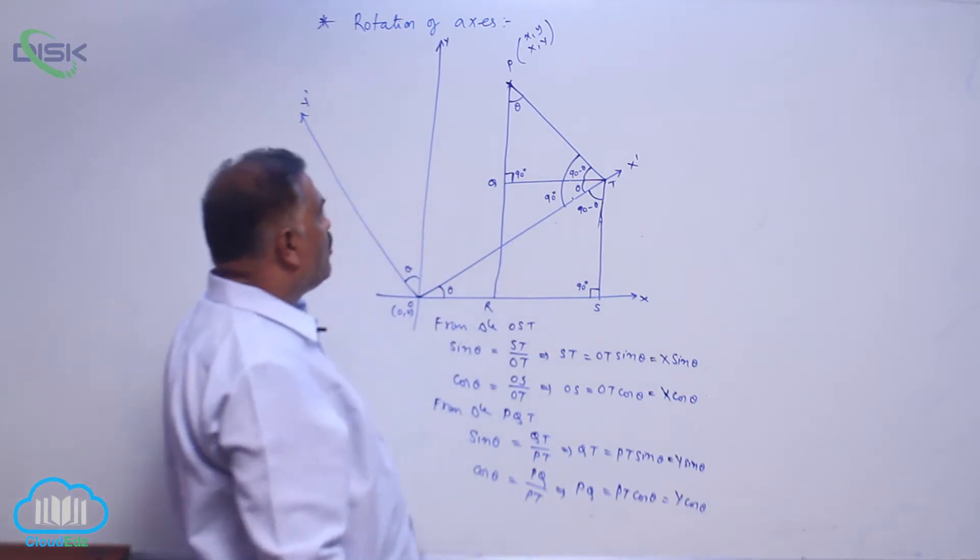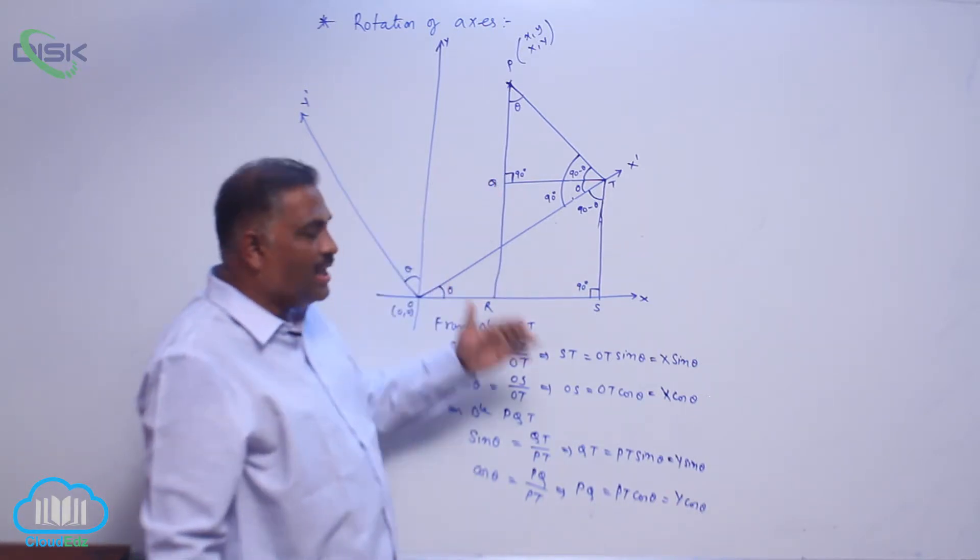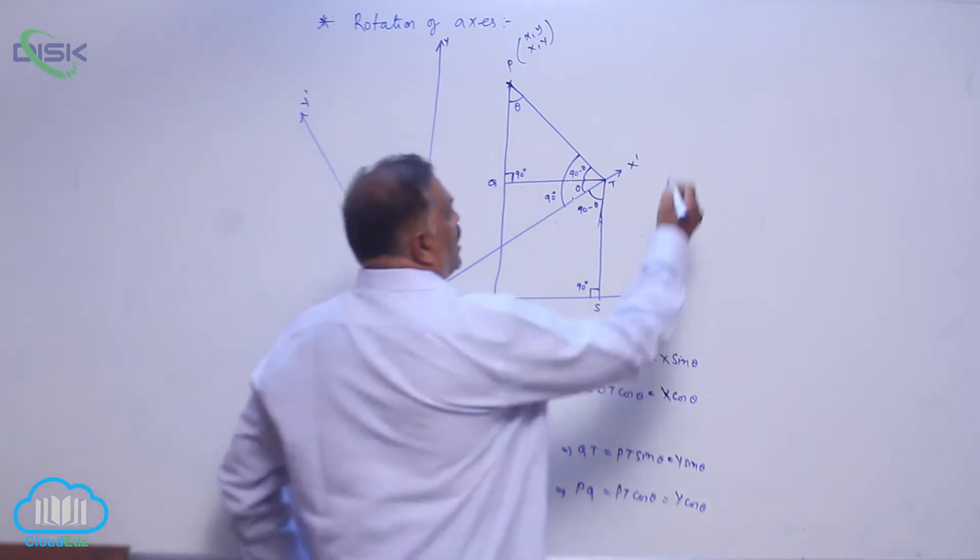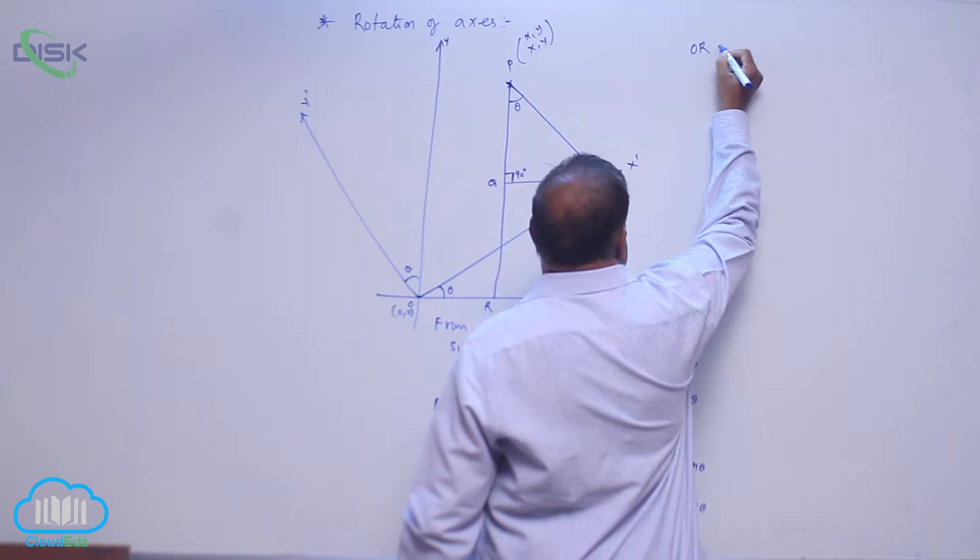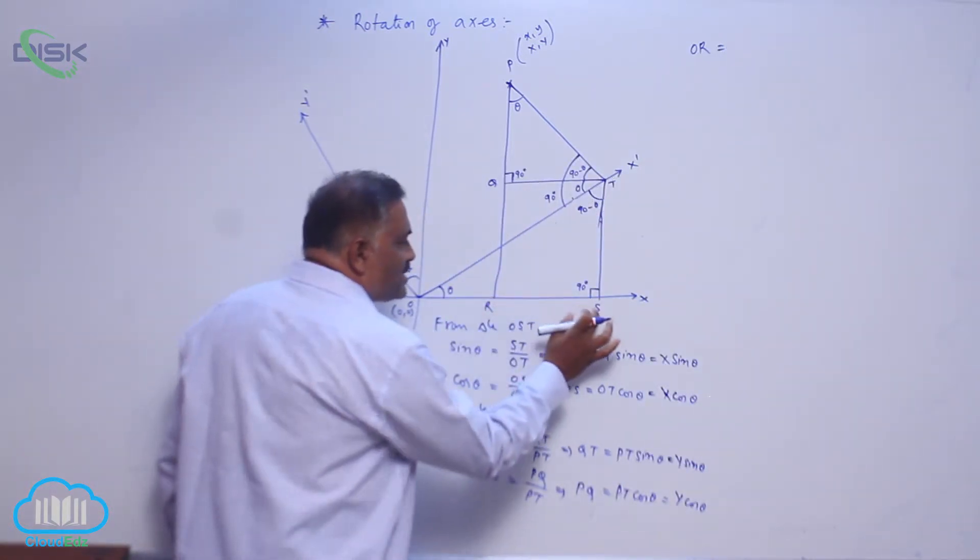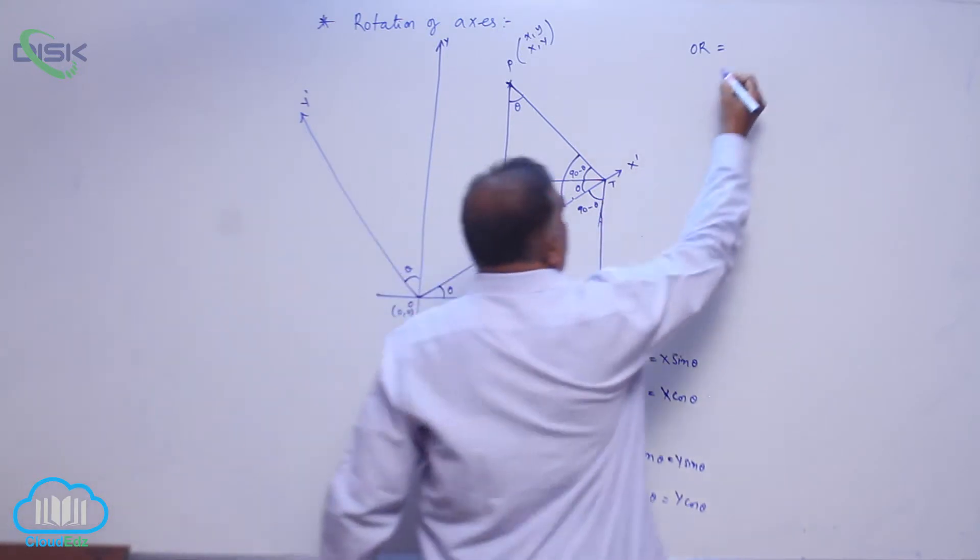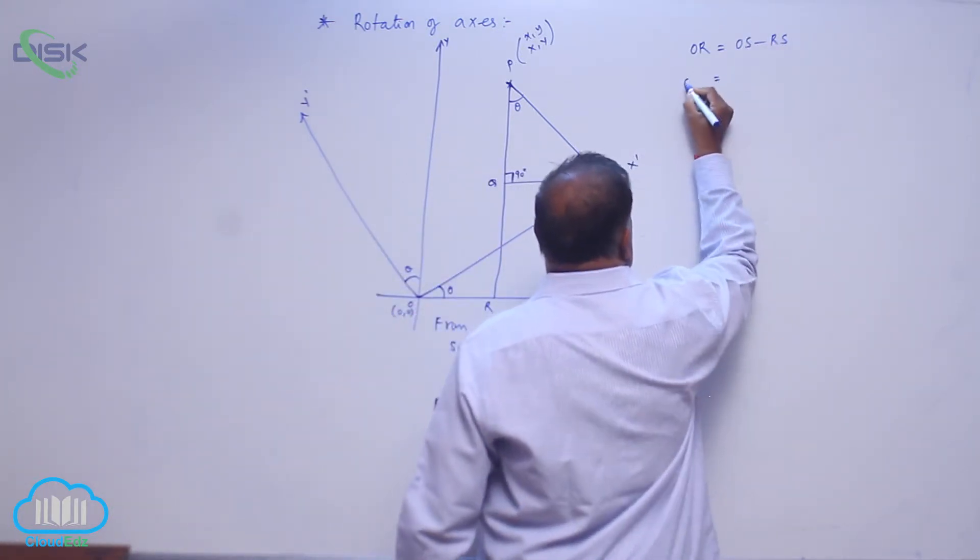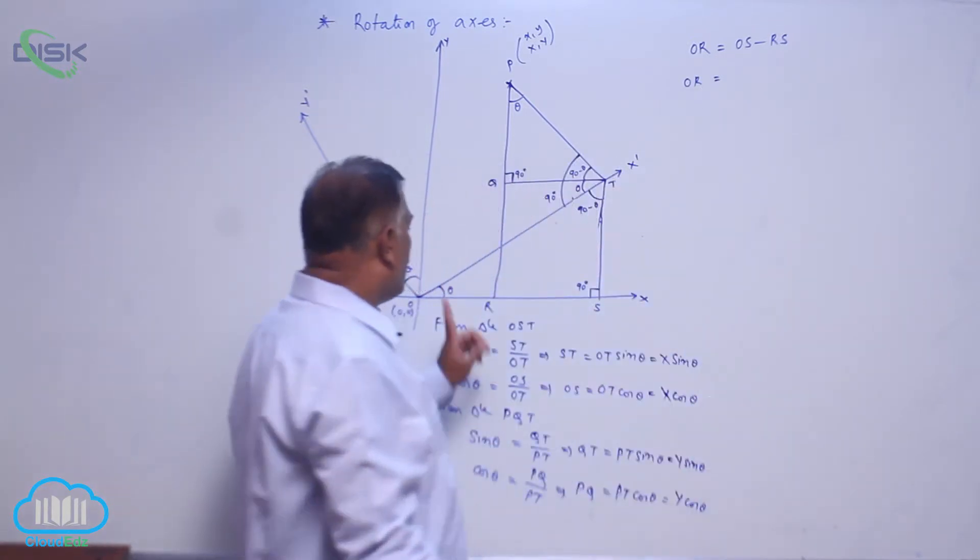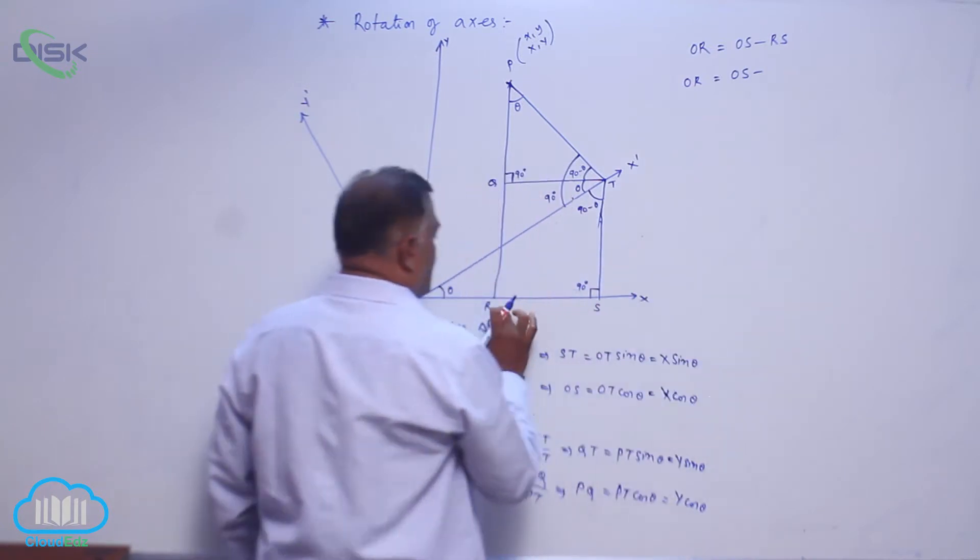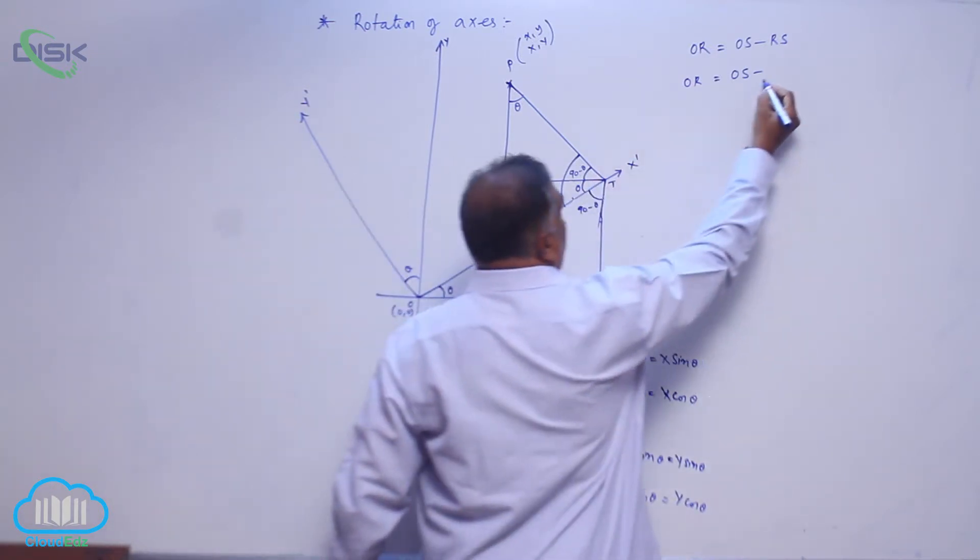Now we require the equations of rotation. First we take OR. Now OR is equal to, OR can be written as OS minus RS. OR equals OS as usual, but RS can be written as equivalent to QT.